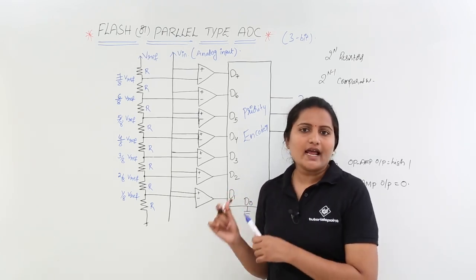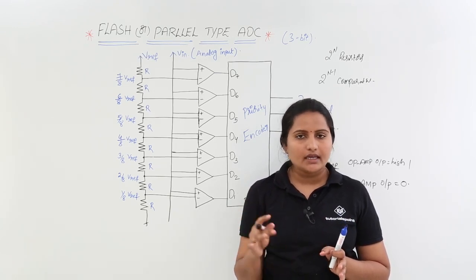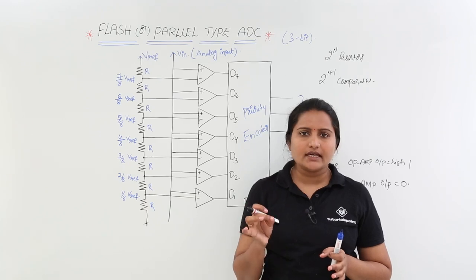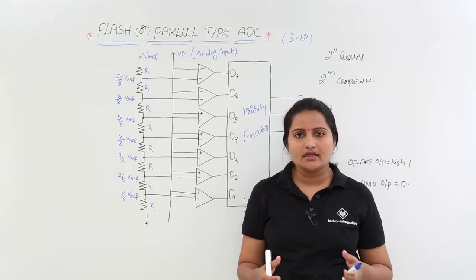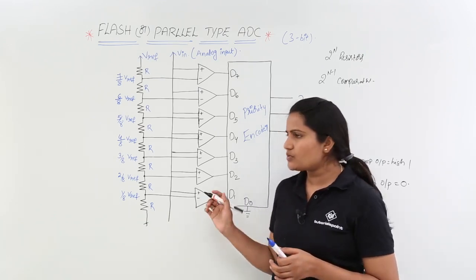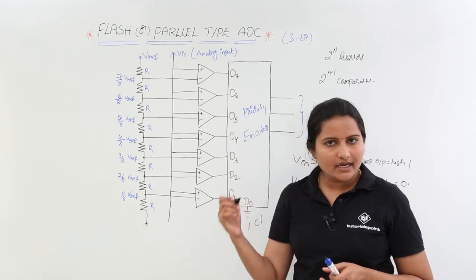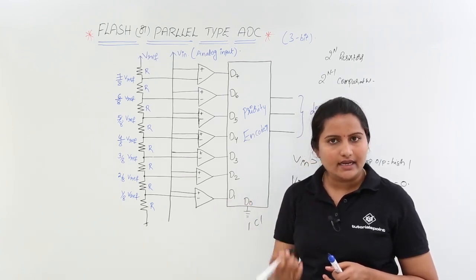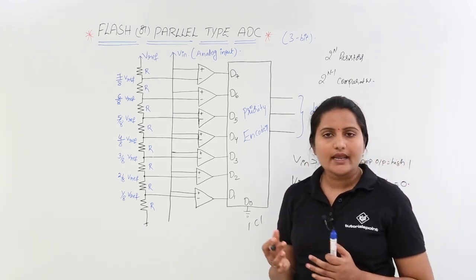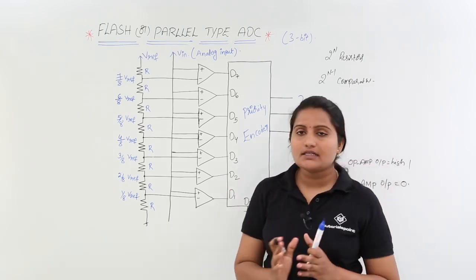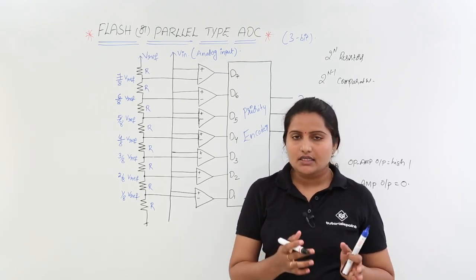In exams, two key points are asked about flash or parallel type ADC: first, it is the fastest ADC among all ADCs; second, it is also the most complex to design. It requires only one clock cycle, compared to 2^n minus 1 clock cycles for counter type and N clock cycles for successive approximation type. The number of comparators required is 2^n minus 1. In the next class we will discuss dual integrating type ADC and sigma-delta ADCs.